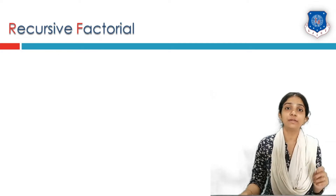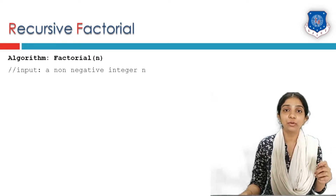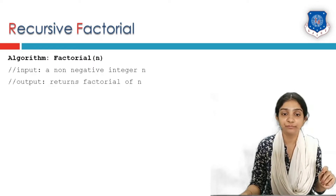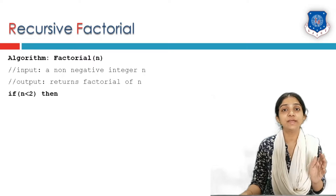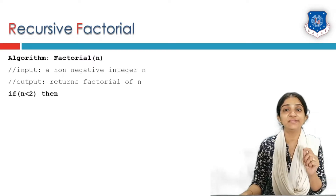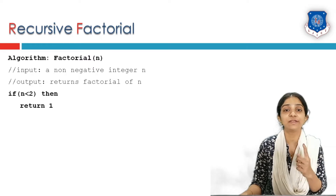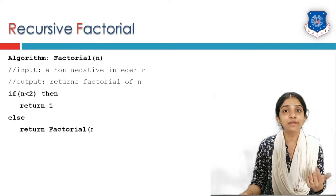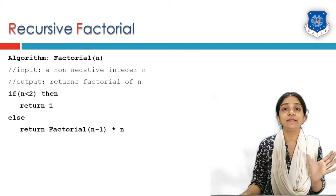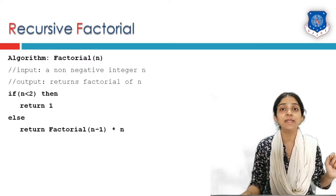Let us see how to solve the factorial problem recursively. The factorial of n takes a non-negative integer n as input and returns its factorial. It first checks whether the number is less than 2, meaning whether n is 0 or 1. If that is the case, we return 1 directly. Otherwise, we call the factorial function recursively and return n into factorial of n minus 1.